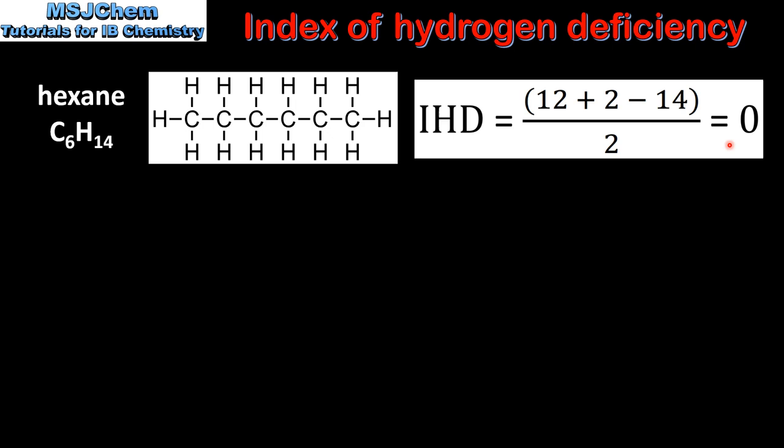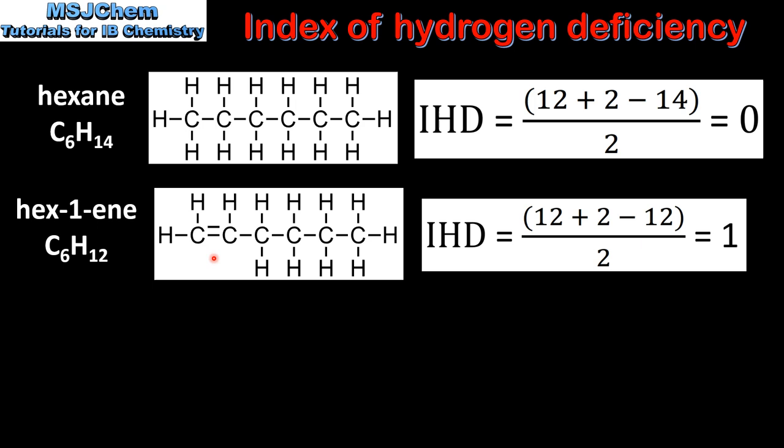This is because hexane is a saturated non-cyclic molecule. Next we look at hex-1-ene, which has a carbon to carbon double bond. The index of hydrogen deficiency for hex-1-ene is (12 + 2 − 12) ÷ 2, which gives us a value of 1. This is because hex-1-ene has one carbon to carbon double bond.